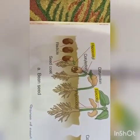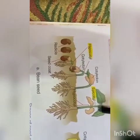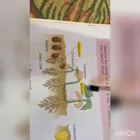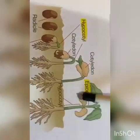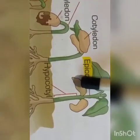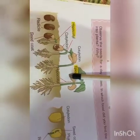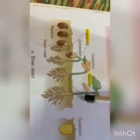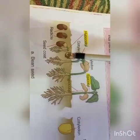Next, the leaves develop completely. We can see in the last figure that the leaves have developed completely and the cotyledons fall off. Thus, the process of germination is completed.